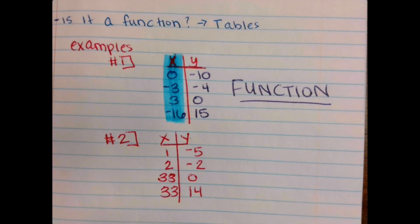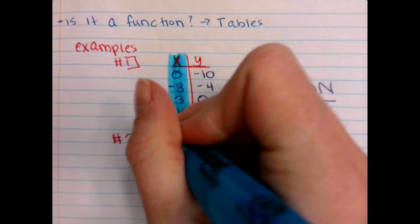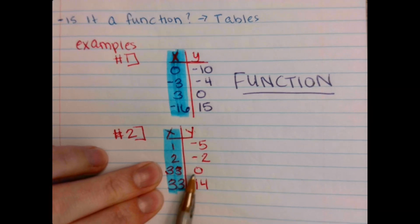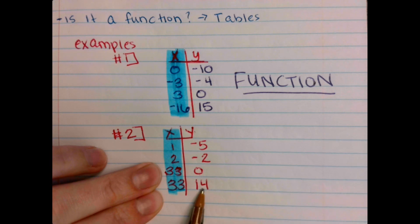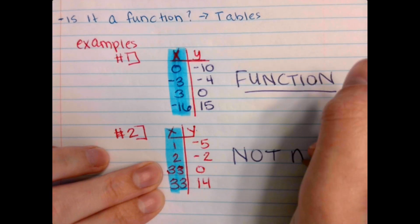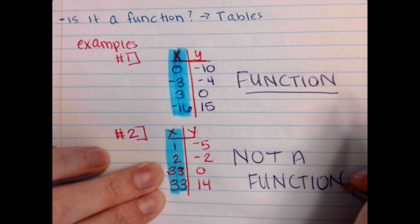So again, let's look at those inputs, that domain. Do any of the x values repeat? Yes, so now we look next to it. 33 maps to 0, 33 maps to 14. Since these two numbers are different, that would be not a function.